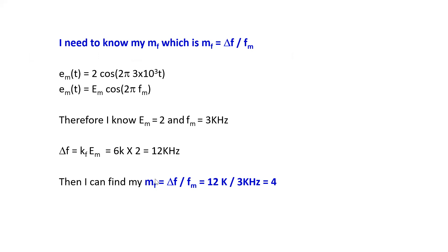Now I'm ready to calculate my modulation index, which is equals to the deviation frequency divided by the frequency of the modulating signal. The deviation frequency is 12k and the frequency of the modulating signal is 3k, so I calculate my modulation index as 4. This is a very important value to find before you can use the Bessel function table.